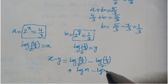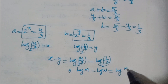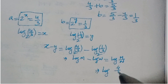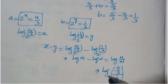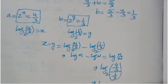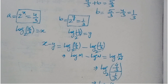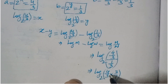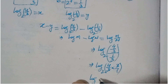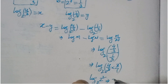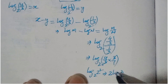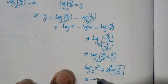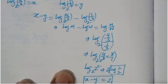Using the logarithm rule log m minus log n equals log(m/n), we get x minus y equals log base 2 of (4/3 divided by 1/3), which equals log base 2 of 4, which equals log base 2 of 2², giving 2 × log₂(2) = 2 × 1 = 2. So x minus y equals 2.